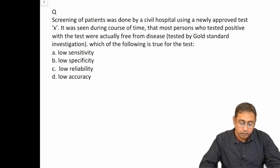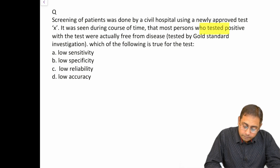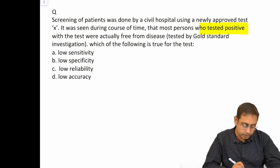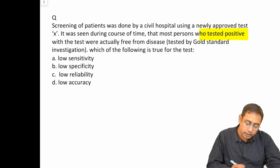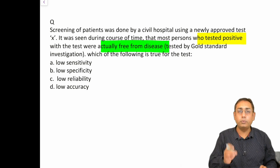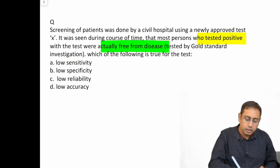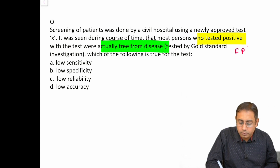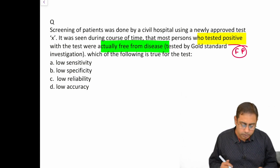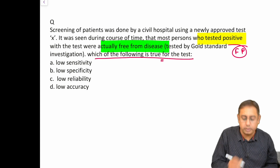MCQ number one: screening of patients was done by a civil hospital using a new approved test X. It is seen during the course of time that most persons who tested positive were actually free from disease. The question is about persons who tested positive but were actually healthy — tested positive by the gold standard investigation. Which of the following is true for the test?